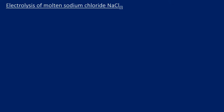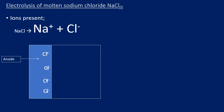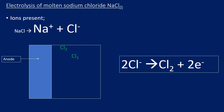At the anode, the negative chloride ions (Cl⁻) are attracted because the anode is positively charged. Electrons are removed from the negative ions to form the element — in this case chlorine. Chlorine is diatomic (Group 7), so the equation requires two chlorides to become one chlorine molecule: 2Cl⁻ → Cl₂ + 2e⁻. The electrons appear on the right-hand side to show they are being lost.